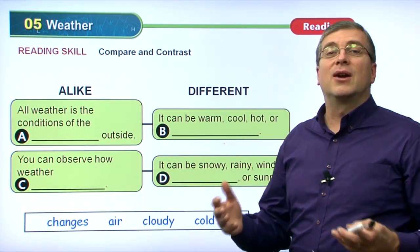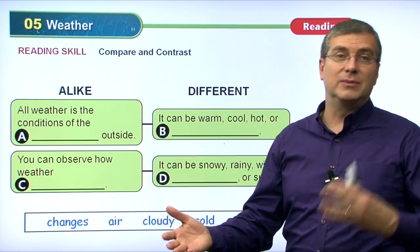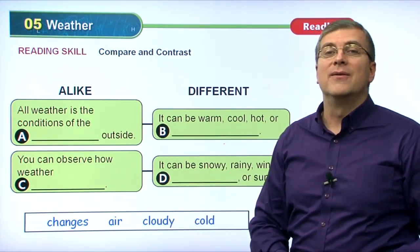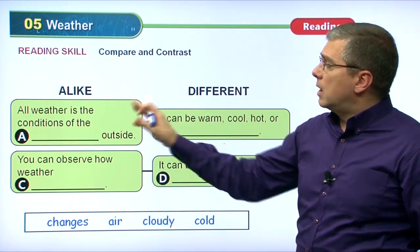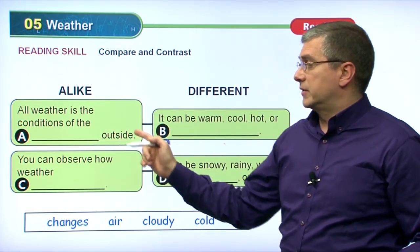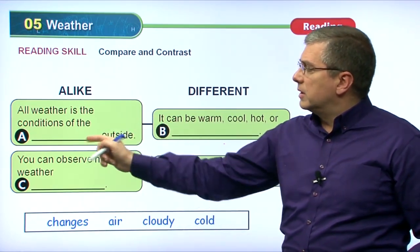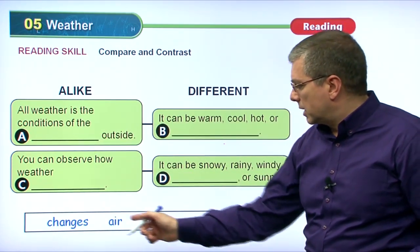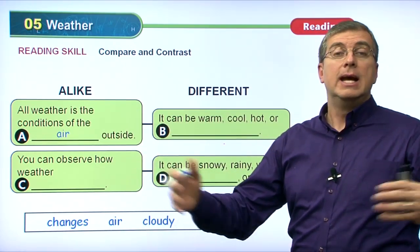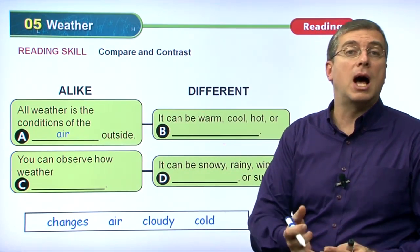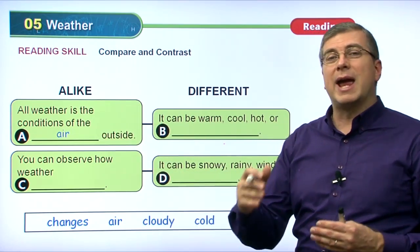When we talk about the weather, it's very easy to use the reading skill of compare and contrast, because weather changes. Sometimes it's rainy, sometimes it's clear, sometimes it's hot, sometimes it's cold. We can say how is the weather alike and how is it different? When we talk about alike: all weather is the conditions of the air outside. From the choices — changes, air, cloudy, or cold — we choose air. All weather is the conditions of the air outside, meaning the atmosphere. What's happening in that air? Is the air cold, hot, raining, or clear?